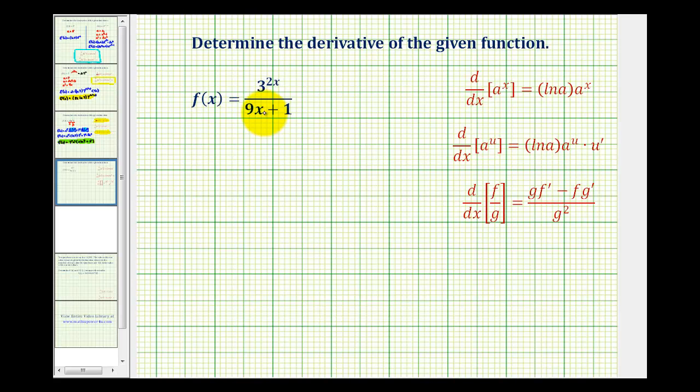To determine the derivative of the given function, we'll have to apply the quotient rule, which is given here. So we'll let the numerator equal f and the denominator equal g. We'll go ahead and write out the quotient rule, and then we'll determine the derivatives of f and g.